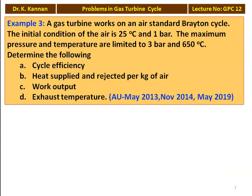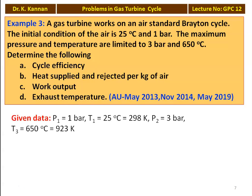Example 3 was asked three times: May 2013, November 2014, and May 2019. A gas turbine works on air standard Brayton cycle. Initial conditions: 25°C and 1 bar. Maximum pressure and temperature are limited to 3 bar and 650°C. Determine cycle efficiency, heat added and rejected per kg of air, work output, and exhaust gas temperature. Given: P1 = 1 bar, T1 = 25°C = 298 K, P2 = 3 bar, T3 = 650°C = 923 K. Pressure ratio Rp = P2/P1 = 3/1 = 3.